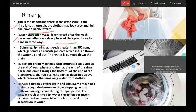Water extraction. Water is extracted after wash phase and after each rinse phase of the cycle. It can be done in three ways. First is spinning at speeds greater than 300 rotations per minute which generates a centrifugal force which in turn throws the water up and out. Next is bottom drain. Machines with perforated tubs stop at the end of the wash and rinse phase and drain through the bottom. The tub begins to spin which removes the remaining water. Third is combination of bottom drain and spin. Some machines drain through the bottom without stopping during the spinning period. This system provides the best water extraction because it can remove the heavy dirt at the bottom and the dirt in suspension in water.